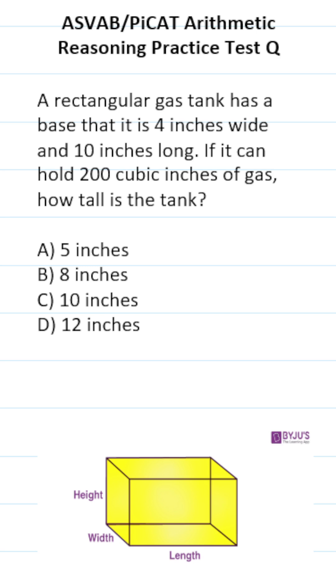So again, this term cubic inches is a clue that we're going to be working with volume. How do you find the volume of a rectangular gas tank, which is a rectangular prism? It's volume equals length times width times height. That is one of the formulas you do have to know for this test.